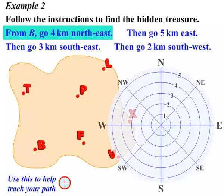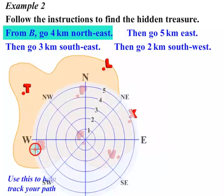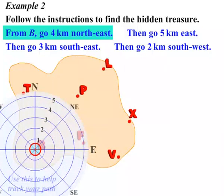Let's go step by step. From B, we're going to go 4 km North-East. So let's move our tracker right on B. Move our compass on to that point B, and we're going to move the tracker 4 km North-East. There we have it. So let's give that step a tick.